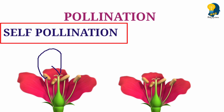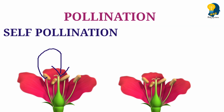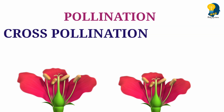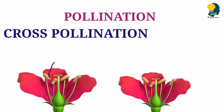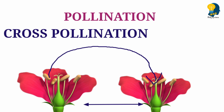Now let us understand the second way the pollen grains get transferred to the stigma — that is cross-pollination. When we say cross-pollination, the pollen grains present in the anther of one flower get transferred to the stigma of another flower. There is a transfer of pollen grains between one flower and another flower. This type of pollination we call cross-pollination.